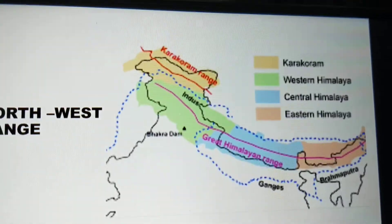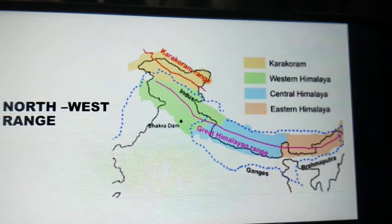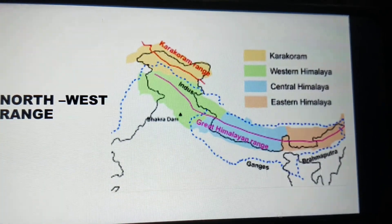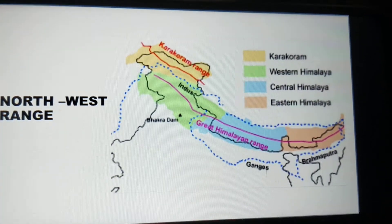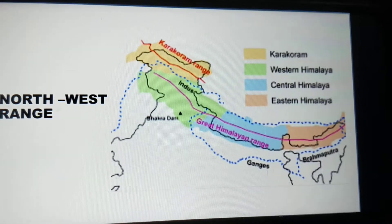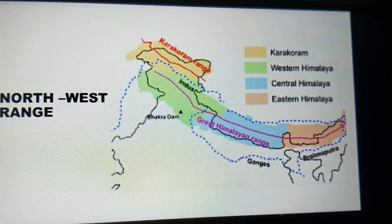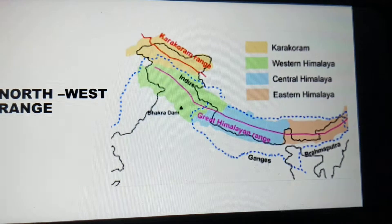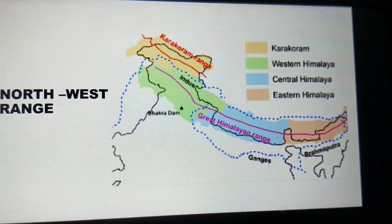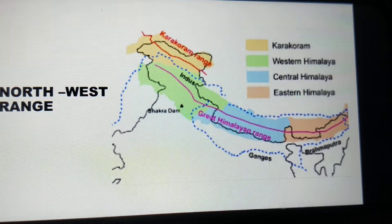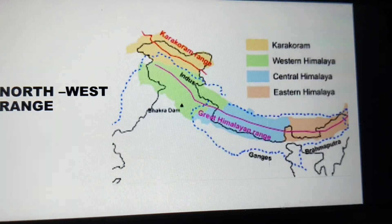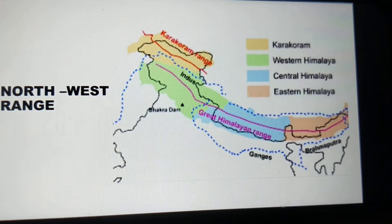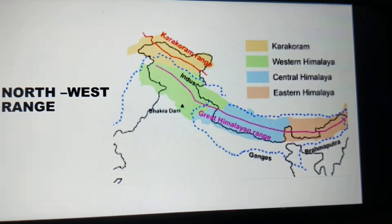Here you can see a map of India showing the northwest range. The yellow part depicts the Karakoram range, the green part shows the western Himalayas, the blue one shows the central Himalayas, and the peach color represents the eastern Himalayas. All of this together is known as the northwest range.